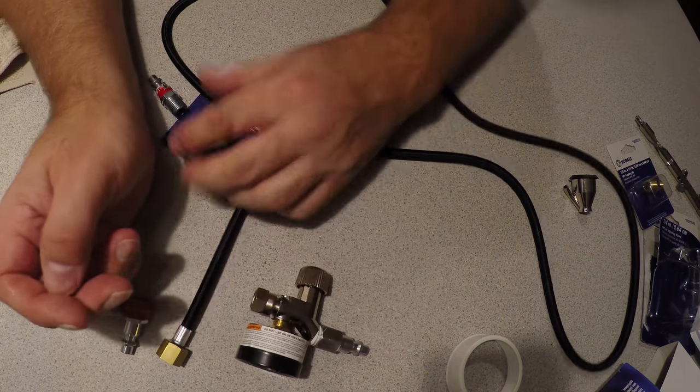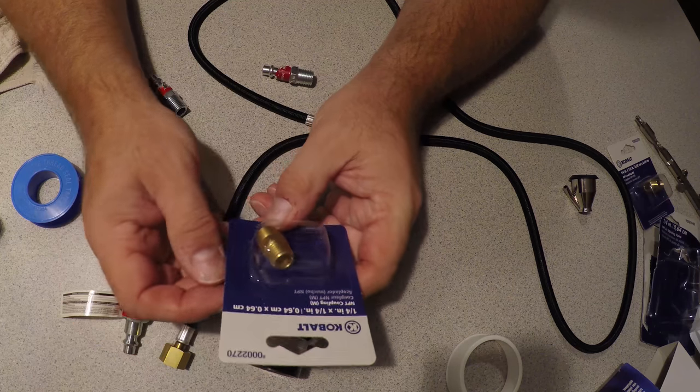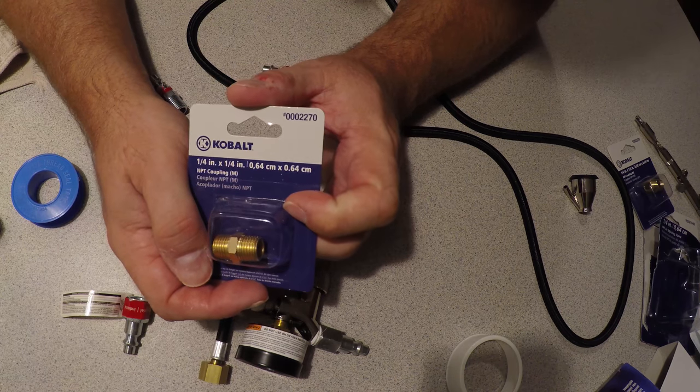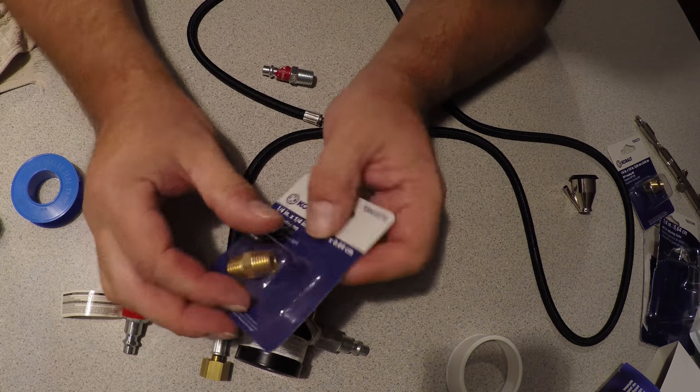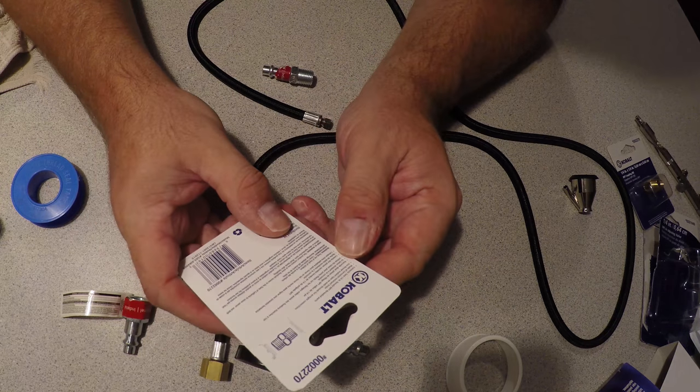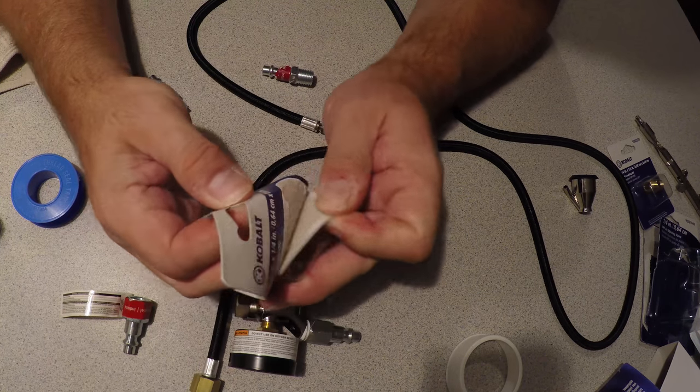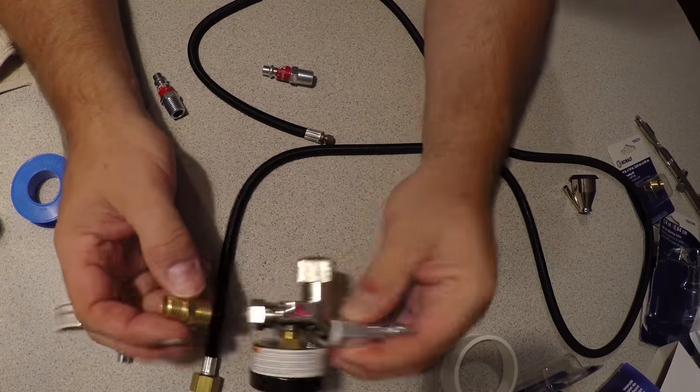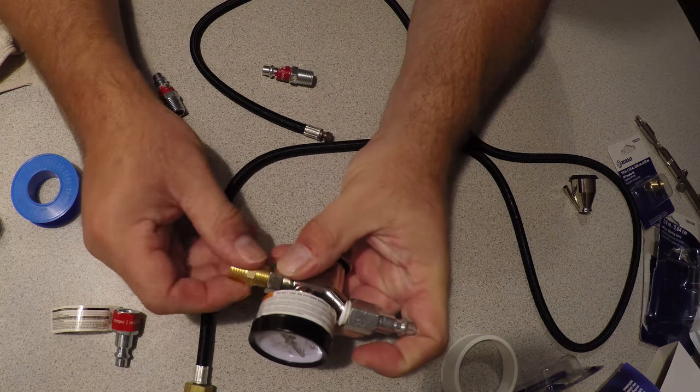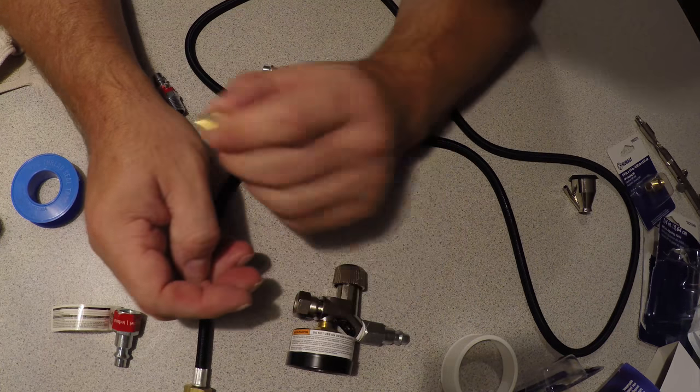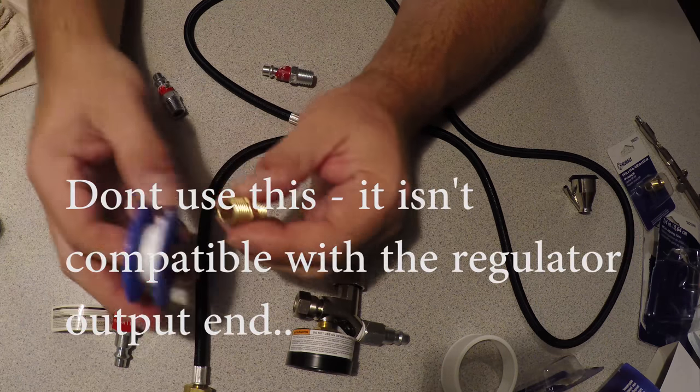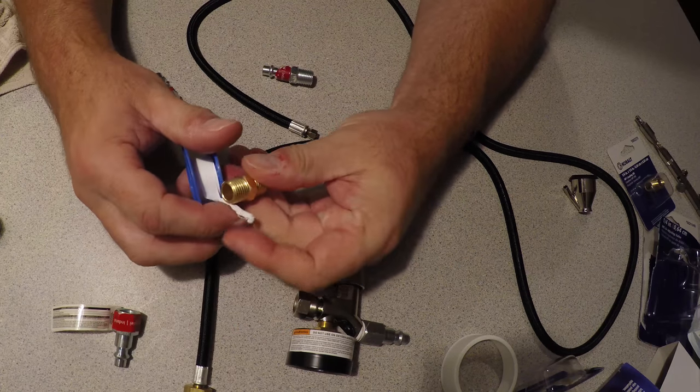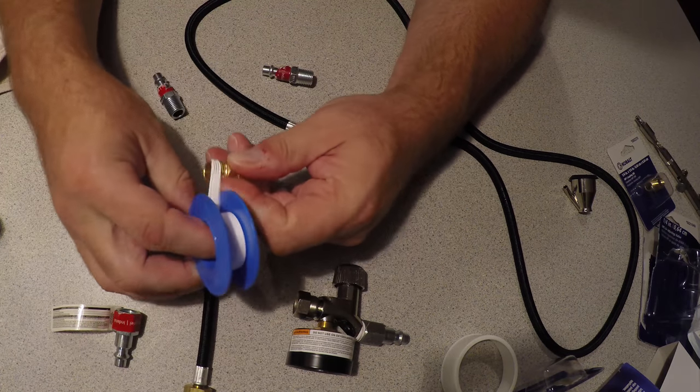Now on this side we need to install the nipple. Here's a nipple, they call it a coupling, everybody in plumbing knows it as a nipple. We can connect this just like this, but I'm not going to do that first. I'm going to run the PTFE tape around it on both sides. Again, start on that side and run around this way.